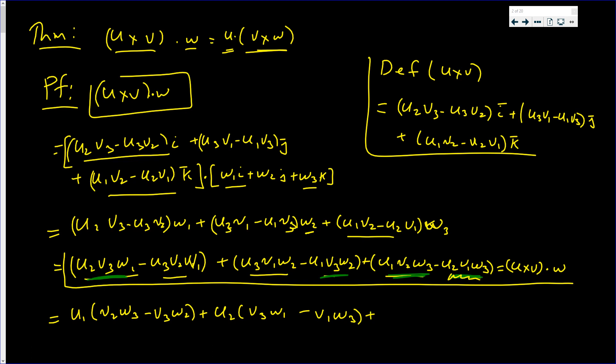I do the same for the u3 component, which is this one and that one. If you notice, I underlined all of them. So we factor out the u3. We get v1 w2 minus v2 w1.